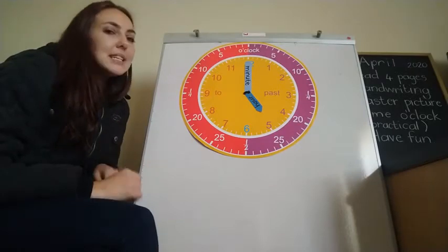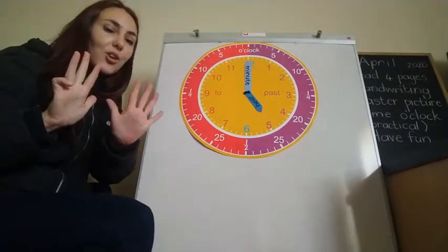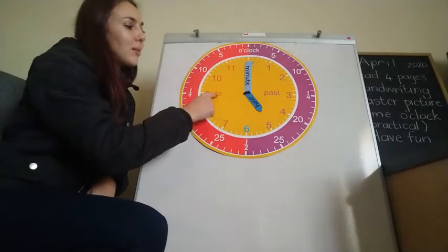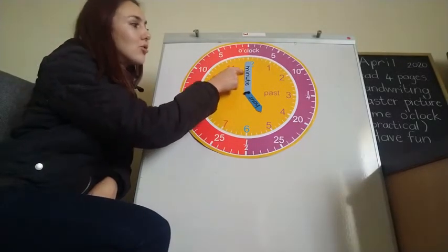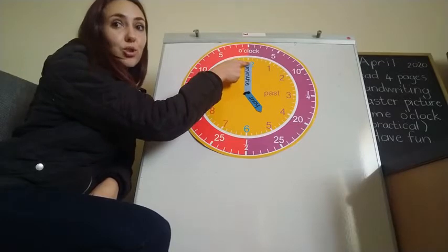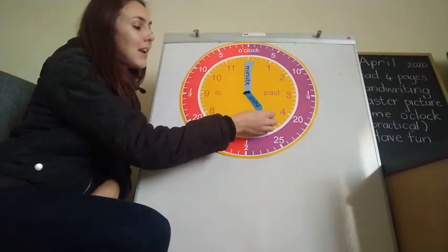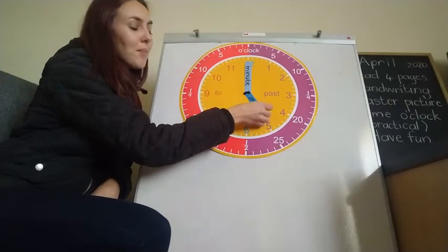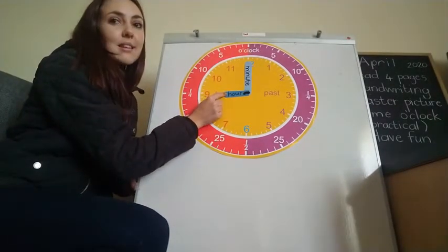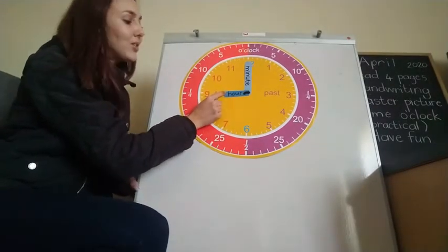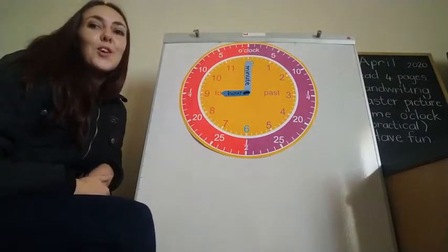Let's do one more. The time is 9 o'clock. So I know that my long minute hand needs to go to the 12 because there's zero minutes, and then my hour hand is going to move to the 9 because it's 9 o'clock.